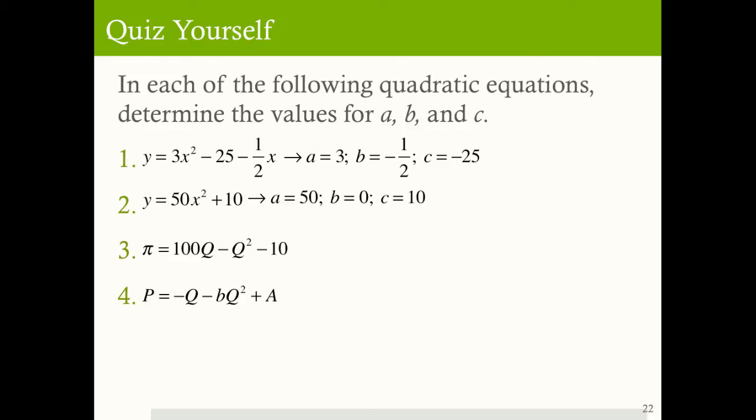In the second equation, y is equal to 50x squared plus 10. The a value is 50, that's the coefficient in front of x squared. b is equal to zero in this case because there is no value of x other than the x squared, and then the constant is 10. In the third equation, profit is equal to 100q minus q squared minus 10. The a value here is negative 1, the b value is 100, and the c value is negative 10.